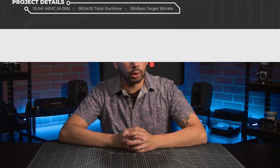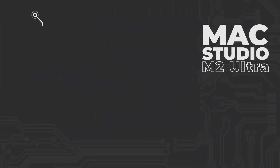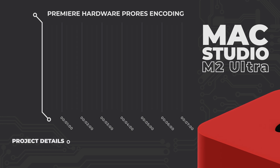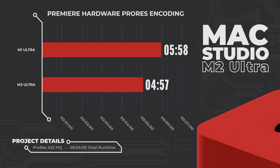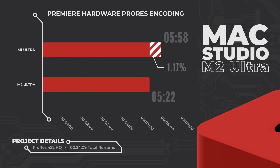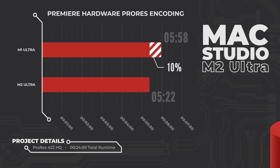ProRes is uniquely supported on all Apple Silicon starting with the original M1, but the Ultra series effectively doubles the encoding and decoding potential due to the fusing of two chips. Our test here was simple. The M1 Ultra rendered a 4K ProRes 422 HQ version of the same project. With a hardware ProRes encoder, the export came out at 5 minutes 58 seconds. The M2 Ultra followed with a render time of just 5 minutes 22 seconds, equivalent to a speedup of about 10%.